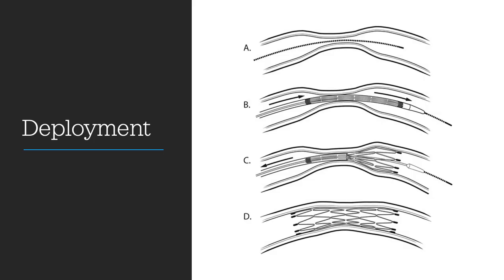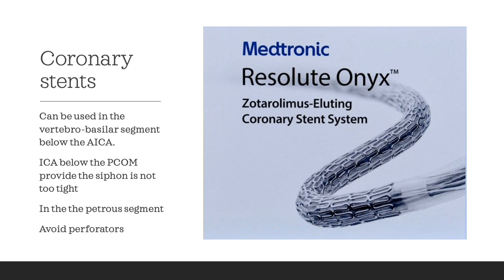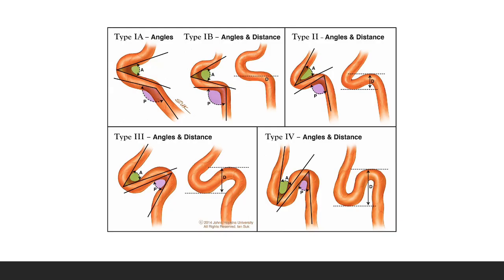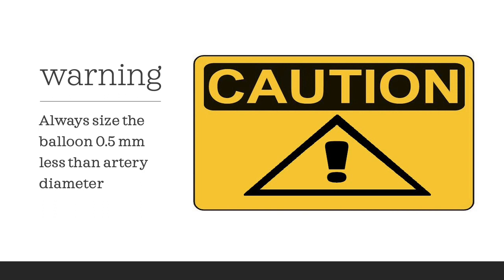The Wingspan is an open-cell nitinol platform with an outer sheath — no microcatheter needed to load it. You do an angioplasty, use an exchange wire, then take the Wingspan over the exchange wire and deploy it by slowly pulling back the sheath. Coronary stents like the Resolute from Medtronic are flexible and perform well particularly in the posterior circulation, but will not cross the siphon. Anything below the siphon or in the posterior circulation below the ICCA is suitable, as above that there are more perforators and you risk a random stroke.